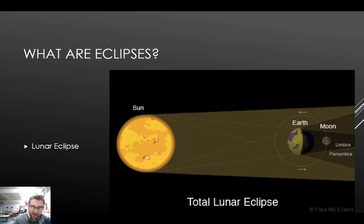Partial lunar eclipses can occur as well. For most lunar eclipses, Earth, the moon, and the sun are not quite in line, and only a partial lunar eclipse results. A partial lunar eclipse occurs when the moon passes partially into the umbra of Earth's shadow. The edge of the umbra appears blurry, and you can watch as it passes the moon for two or three hours.